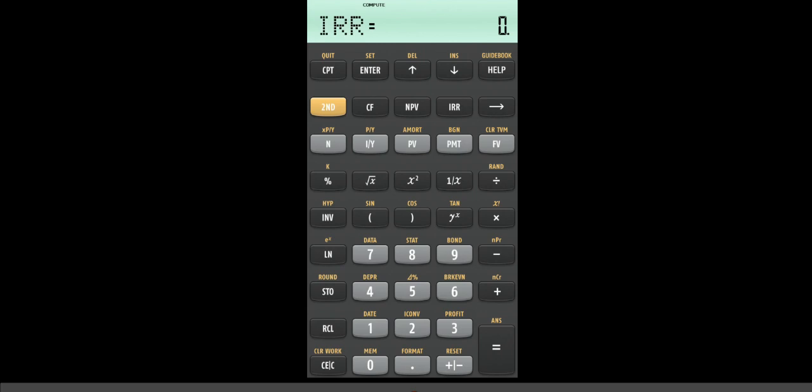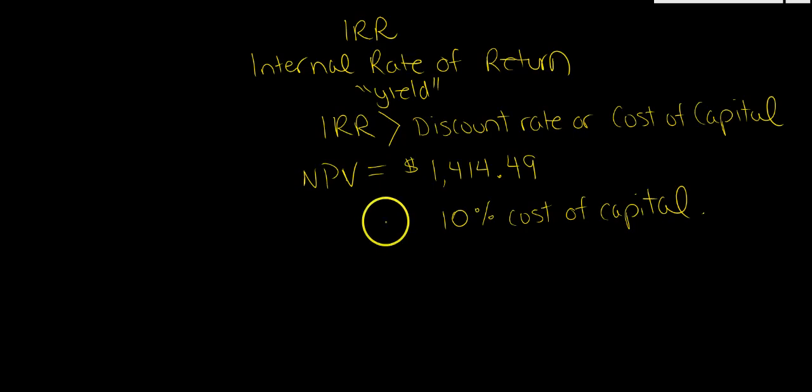All you have to do is hit the IRR button after you ran the net present value, and then you just hit compute. That will give us our internal rate of return of 14.33%.